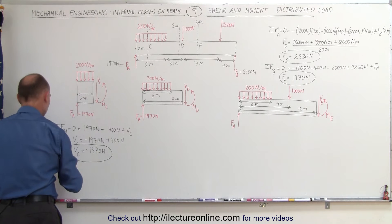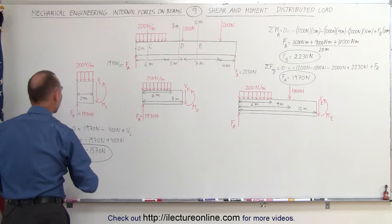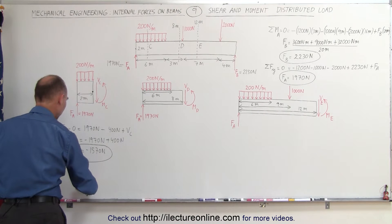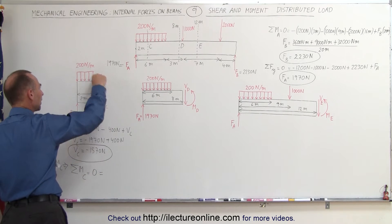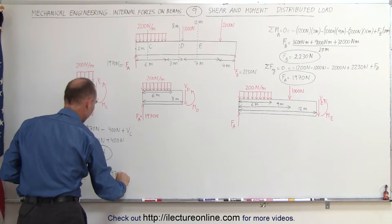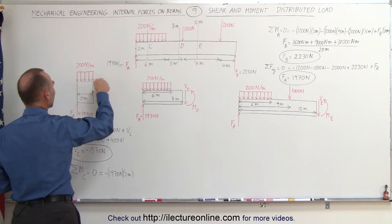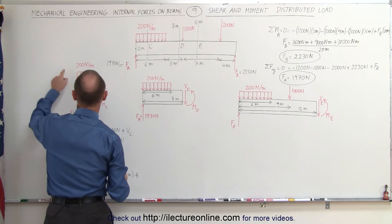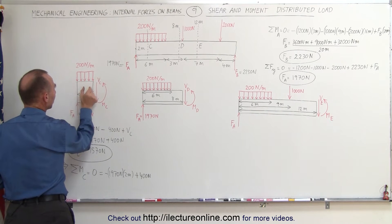The second thing we need to calculate is the moment at C. We take the sum of all the moments about point C, and they must add up to zero. First, we have the moment caused by the reaction force at A — a clockwise moment, which is negative — 1970 N times a distance of 2 meters. Then we have the distributed load: a total of 400 N (200 N/m times 2 m), acting as a counterclockwise moment, times an average distance of 1 meter (the halfway point).